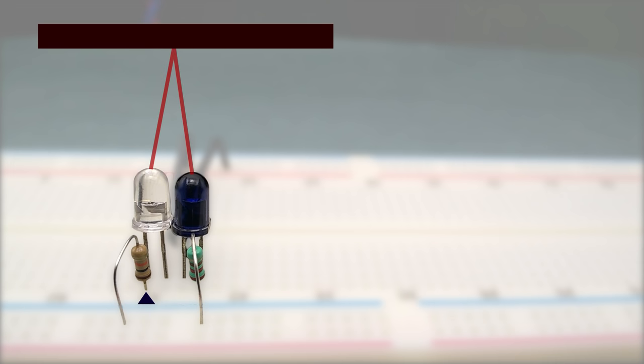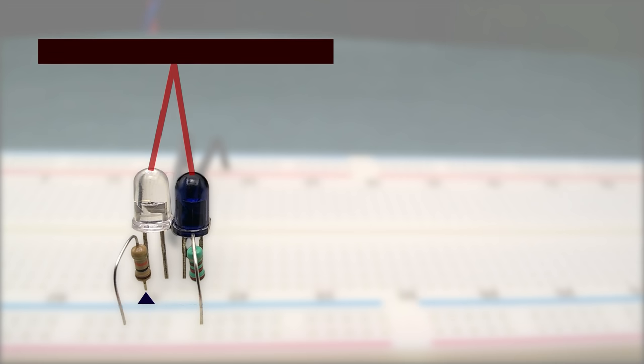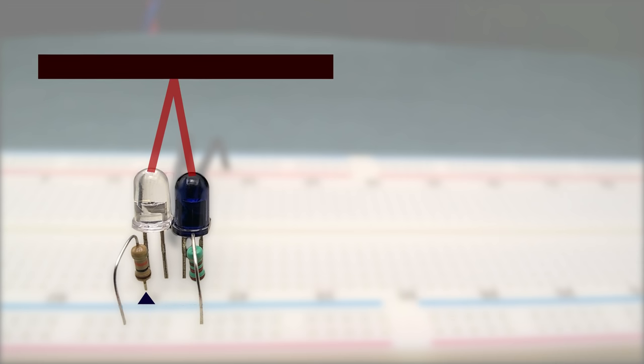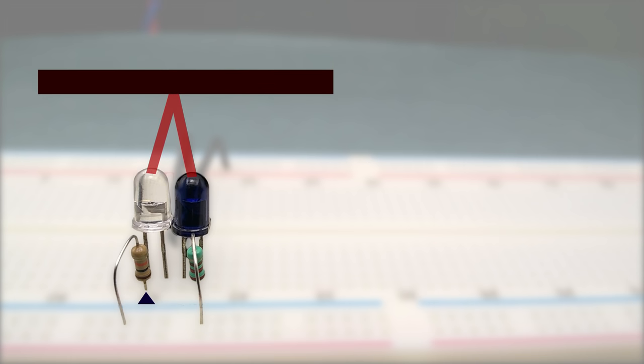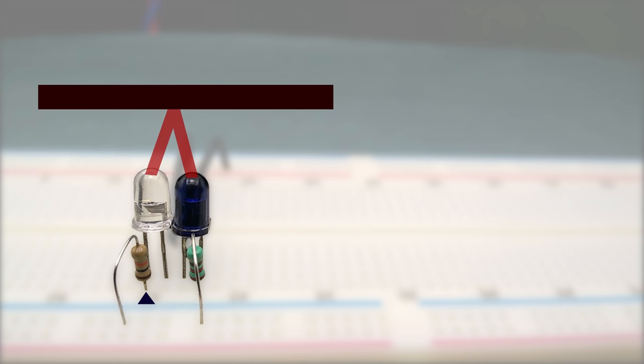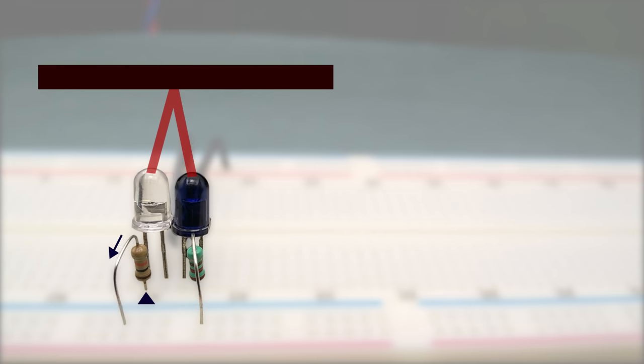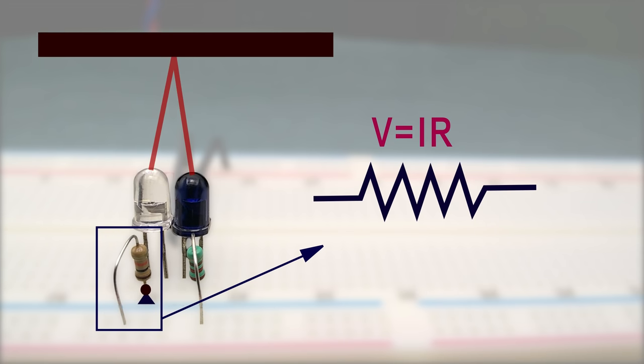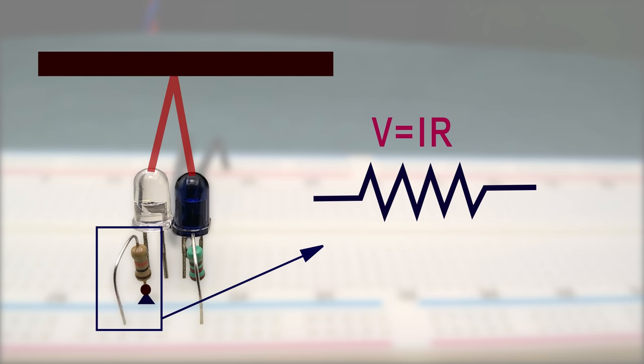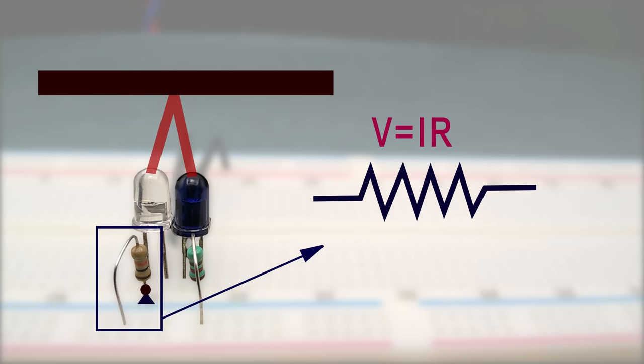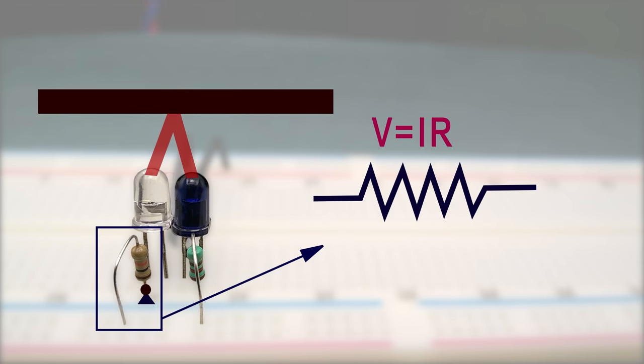So, as the obstacle comes nearer to the sensor, the amount of infrared light that reflects and falls on the infrared photodiode increases which causes more current to flow through the resistor and more the current, more is the voltage at this point as we can deduce it from the Ohm's law, V is equal to IR, where R is constant and I which is current increases when an object approaches the proximity sensor.